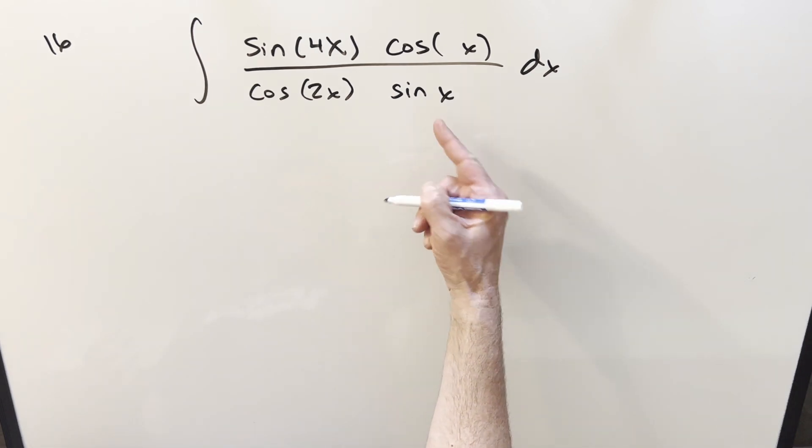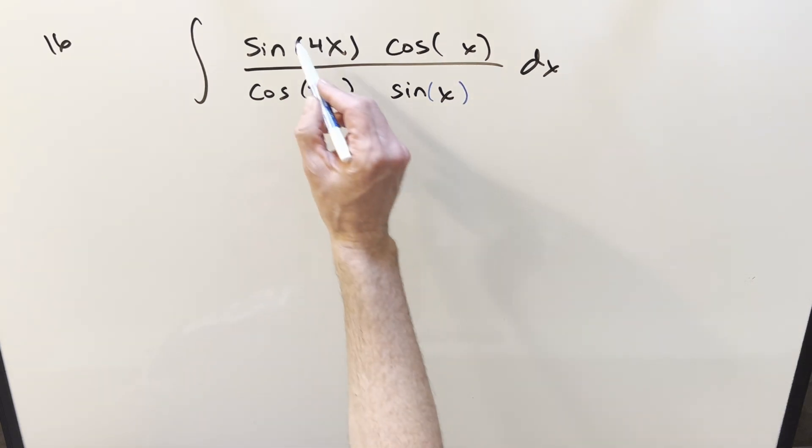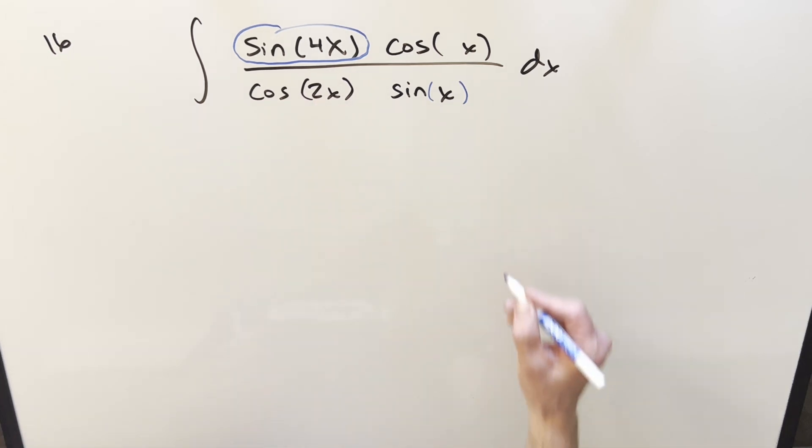And we've got single x, 2x, 4x. What if I reduce this one? Because sine is usually, I find sine kind of easier to work with.